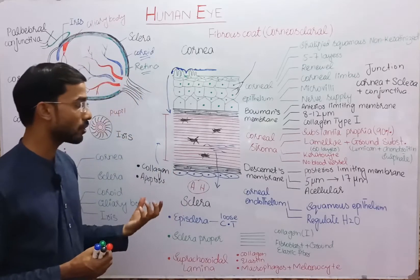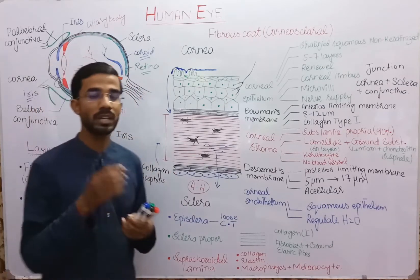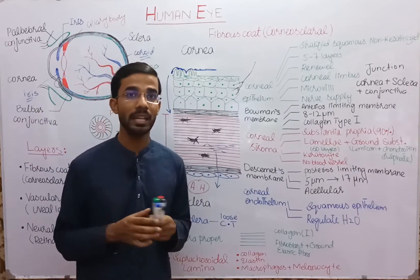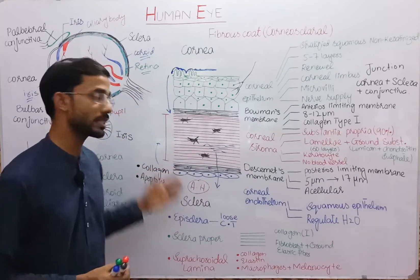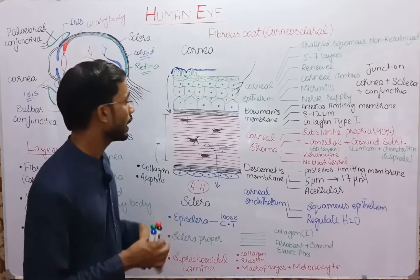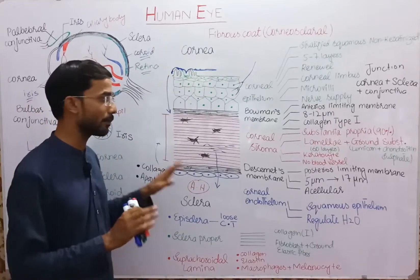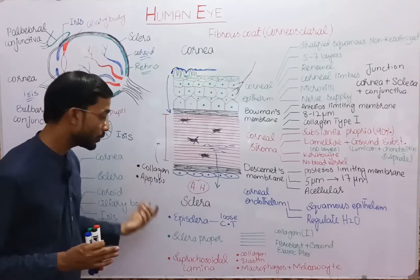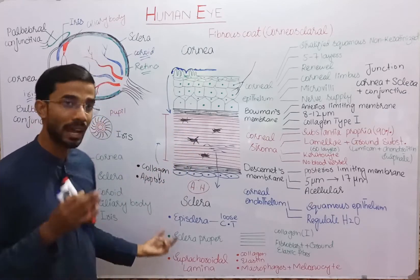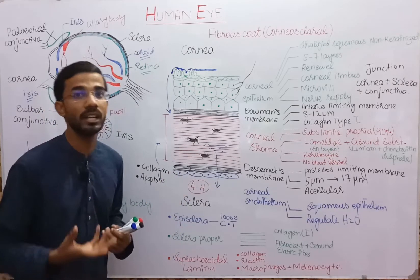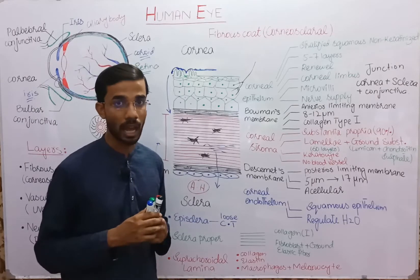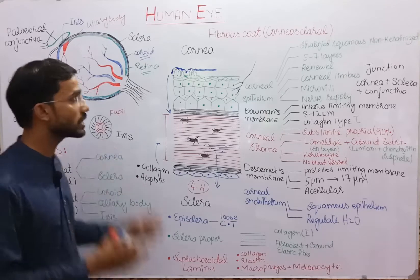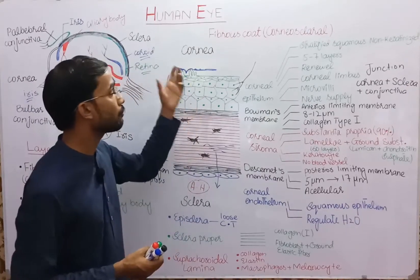Melanocytes are involved in the formation of melanin, which is a pigment, and this melanin gives a dark appearance to the sclera. In the cornea there are no such cells, which is why it gives transparency. Due to the presence of melanocytes in the sclera, it has a dark color, which prevents scattering of light inside the eye. This concludes the layers of the fibrous cord.